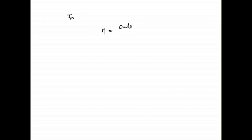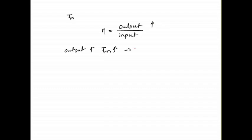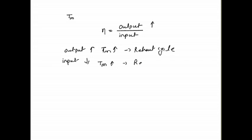In simple words, efficiency is the ratio of output divided by input. In the reheat cycle, we worked on increasing the output to increase the efficiency of the cycle. But in the regenerative cycle, we will study about decreasing the input. If we decrease the input, it will increase the mean temperature and automatically improve the efficiency of the cycle. This is the concept of the regenerative cycle.